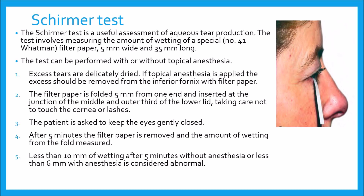The Schirmer test is next. It is a useful assessment of aqueous tear production as opposed to aqueous tear deficiency. The test involves measuring the amount of wetting of a special number 41 Whatman filter paper, 5 mm wide and 35 mm long. The test can be performed with or without topical anesthesia. When performed with an anesthetic, Schirmer 2 basic secretion is measured, and without anesthetic, Schirmer 1 measures maximum basic plus reflex secretions.